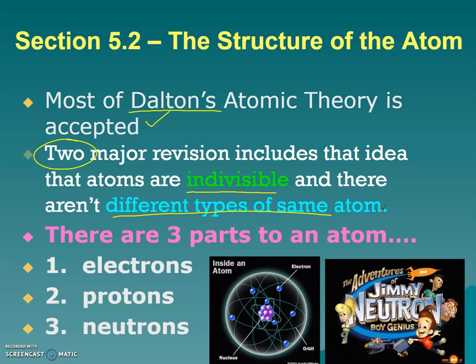So a lot of what you already know about an atom is more advanced than John Dalton. We know that there's three parts of an atom. There are electrons, there are protons, and there are Jimmy Neutrons.